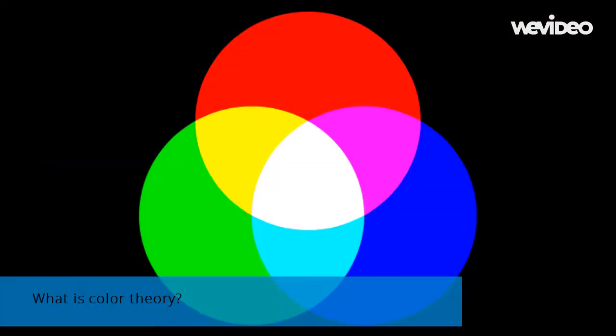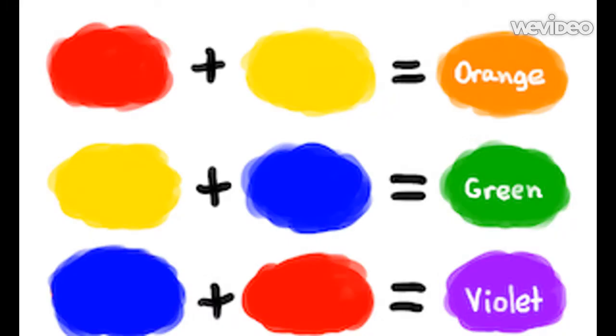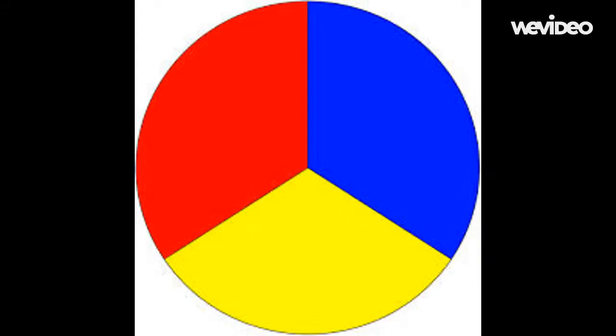Today we will begin our lesson with color theory. You may be asking yourself, what is color theory? Essentially, color theory is a guidance to the mixing of colors and the visual effects that take place when certain colors appear together. There are three categories of color. First, we have our primary colors consisting of red, yellow, and blue, and those three colors make up all the other colors in the color spectrum.